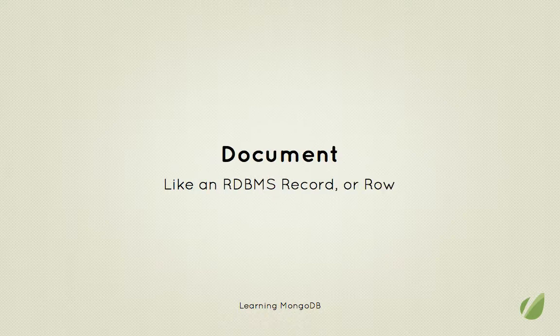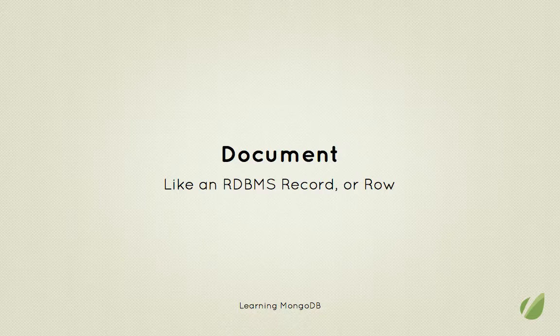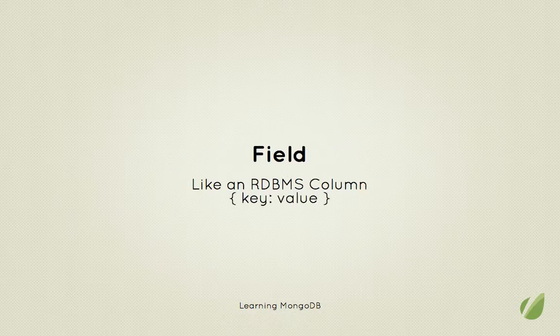I just called them records in a collection, but the proper NoSQL term is actually documents, and these are akin to the records or rows that you would have in a traditional relational database. As we mentioned in the previous screencast, these are BSON documents, very much like JSON. Since the collections they're stored in don't have a schema, there's no need for these documents to have the same set of fields — we can have whatever fields we want, differing from document to document within the same collection.